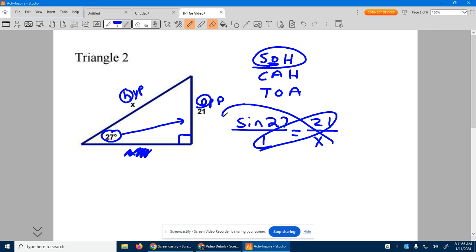These multiplied equal those multiplied. So we can see X times sine of 27 is equal to 21 times 1, which is 21.